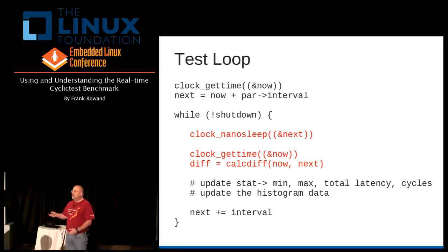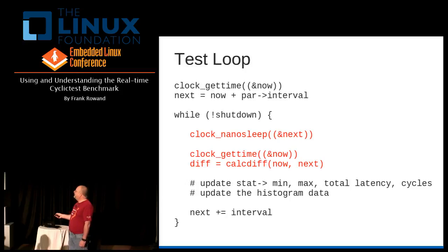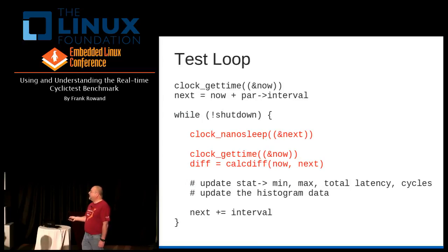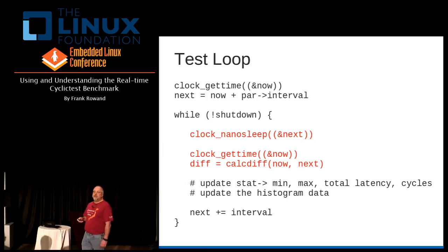So we have a thread executing. We find out what time it is right now — it's pseudocode, so the double parentheses are so you won't get upset that clock_gettime really has two or three parameters. We find out what time it is now. We say the next time we want to wake up is now plus some interval. Then we go into a loop and sleep until that time. We say what time is it now that we've woken up — that whole list of possible delays has occurred and now we're awake. Then we say what's the difference between when we planned to wake up and when we actually did start executing. That's our latency. Diff is our magic key variable that we're going to be reporting on through our cyclic test reports.